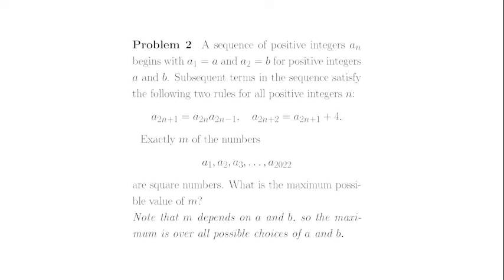Problem 2. A sequence of positive integers a_n begins with a_1 equal to a and a_2 equal to b for positive integers a and b.